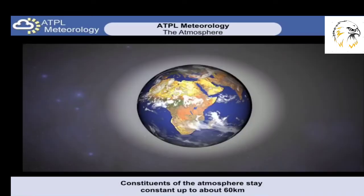The relative amounts of the gases stays fairly constant up to about 60 km above the Earth. Thereafter, gravitational separation alters the composition of the atmosphere. However, there are other changes, primarily in temperature, that allow us to structure the atmosphere into segments.